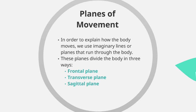Planes of movement: in order to explain how the body moves, we use imaginary lines or planes that run through the body. These planes divide the body in three different ways. We have the frontal plane, the transverse plane, and the sagittal plane.